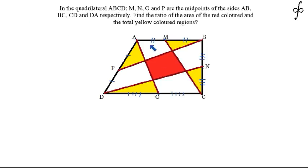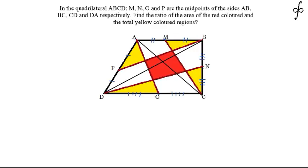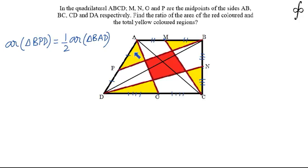To start with, if we consider the strip AMCO, since M and O are midpoints, we can easily prove that the area of AMCO will be half the area of the quadrilateral. Let me quickly join the diagonals — BD is one diagonal and AC is the other. From the figure we can claim that the area of triangle BPD equals half the area of triangle BAD, because the base PD is half of AD.